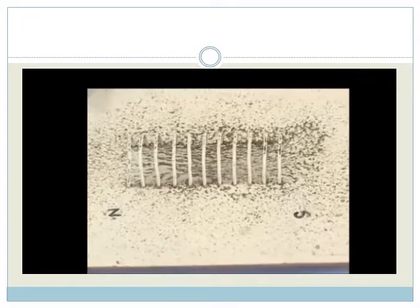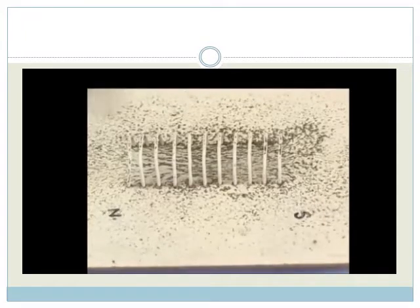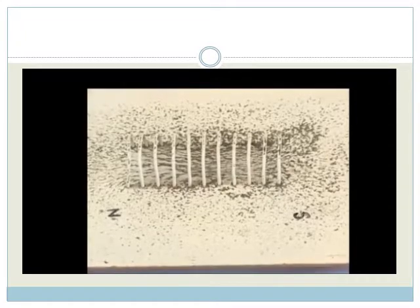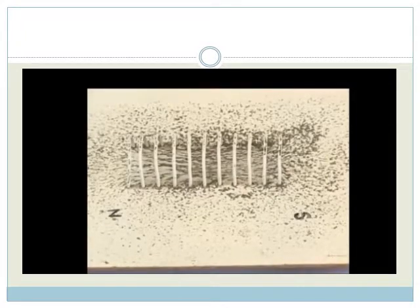We can use the iron filings to see the field lines. When we switch the current on, the filings move. We can see the field lines surrounding the individual wires, but look at the middle. Notice how they all seem to be aligned.